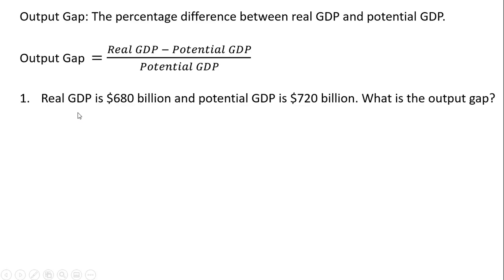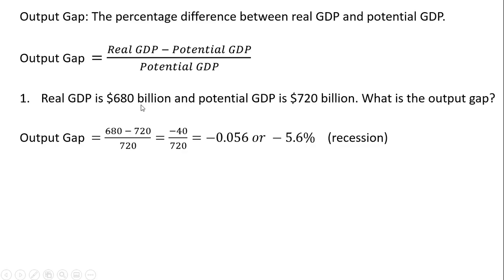We'll do some example problems. Real GDP is $680 billion and potential GDP is $720 billion. What is the output gap? Plugging our numbers into the formula — real GDP minus potential GDP divided by potential GDP — we get minus 0.056, or minus 5.6%. So this is an indication that the economy is underperforming. It is in a recession.